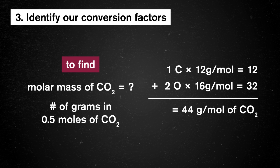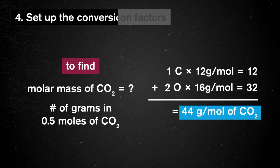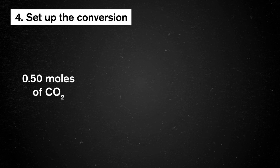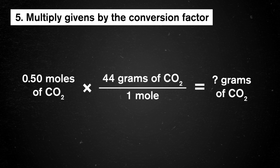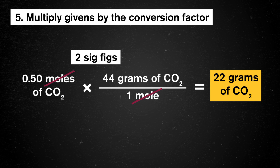Third, we pick our conversion factor — the molar mass, whose units include both moles and grams. Fourth, our conversion is ordered so that moles cancel out and leave us with grams of carbon dioxide. We have 0.50 moles of carbon dioxide multiplied by our molar mass conversion factor, with grams on top and moles on the bottom. Fifth, we multiply, solve, and round to 2 sig figs. Our moles cancel out, and we're left with 22 grams of carbon dioxide.